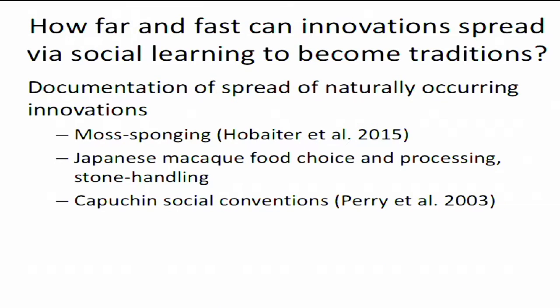How far and how fast can innovation spread via social learning to become traditions? Documentation of naturally occurring innovations has been seen in many studies. The adoption of new food sources can be rapid, particularly during times of food stress — in Japanese macaques it can take hours to days. Acquisition of new foraging skills can be slower depending on task complexity. For example, Kat Hobaiter found that moss sponging spread to eight chimps in six days at Budongo, which is pretty quick. Something as complex as hammer-and-anvil use may take months or years to acquire.